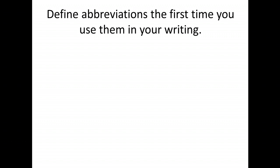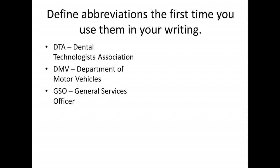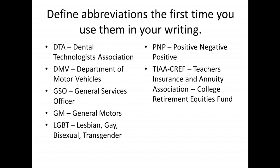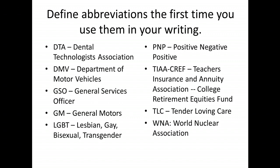We can also define abbreviations. For example: DTA — the Dental Technologists Association; DMV — the Department of Motor Vehicles; GSO — General Services Officer; GM — General Motors; LGBT — Lesbian, Gay, Bisexual, Transgender; PNP — positive, negative, positive; TIAA-CREF — the Teachers Insurance and Annuity Association College Retirement Equities Fund; TLC — Tender Loving Care; and WNA — World Nuclear Association. There are countless abbreviations like these. We forget when we're very close to a subject that not everyone will know what they mean. So the first time we use them, we should define them in formal writing.